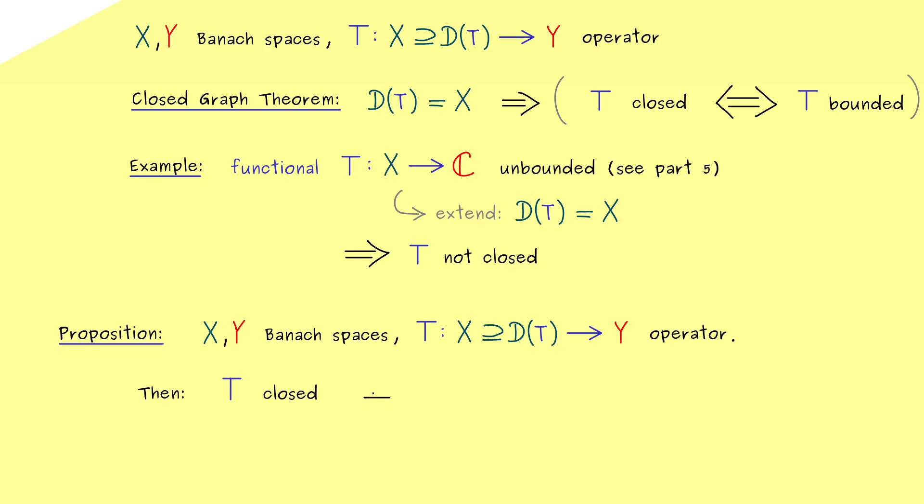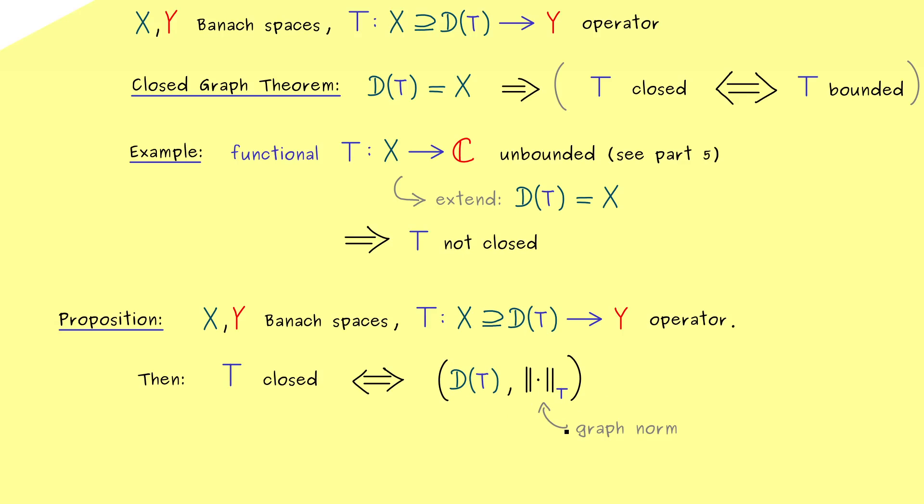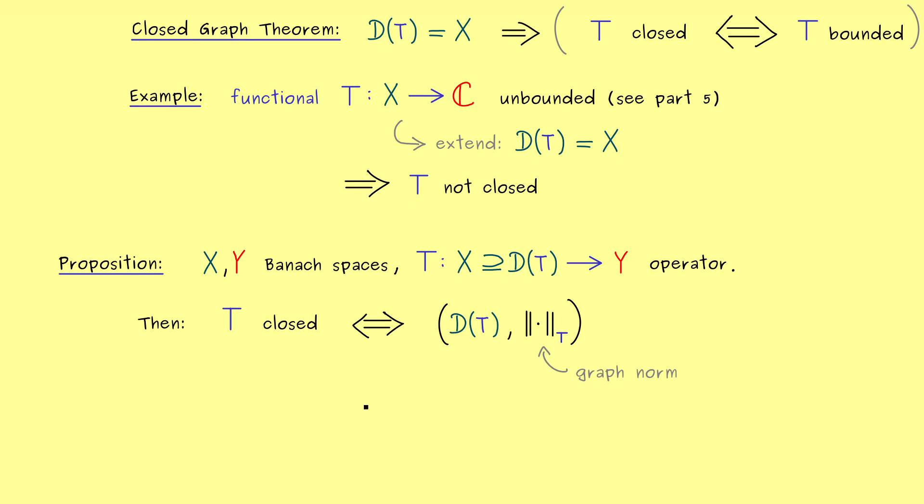Namely we have that T is a closed operator if and only if the domain D(T) is a complete space. However not complete with respect to the original norm in X but complete with the so-called graph norm. This one is usually denoted here with an index T and it simply has the graph of T in mind.